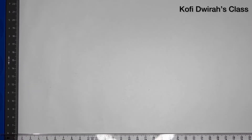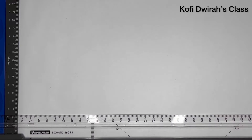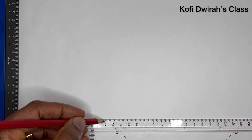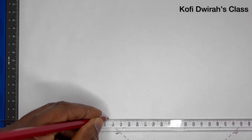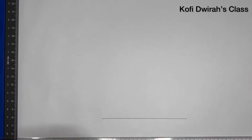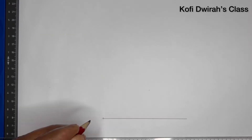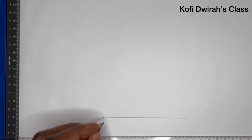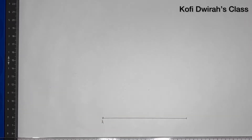So to construct a 150 degrees angle, we are going to use our compass. First, with your T-square, you draw a straight line. We have this point to be point A and point B.